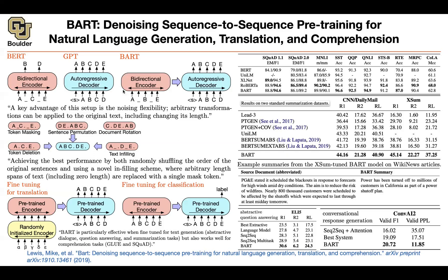The core idea is to use not only the encoder part of the transformer, not only the decoder, but both of them. For the inputs, use the masking strategy. For the outputs, the loss function is next token prediction.